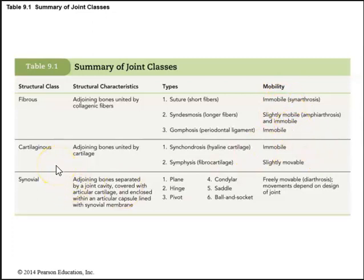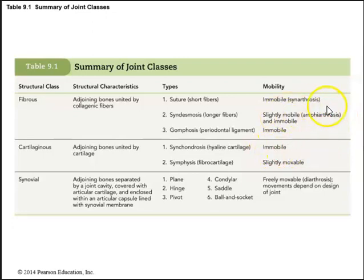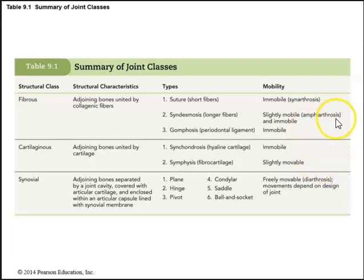We then have cartilaginous joints, where adjoining bones are united by cartilage. There are two types: synchondroses and symphysis. Synchondroses are made up of hyaline cartilage and are immobile — functionally they are synarthroses. Symphysis, like the pubic symphysis, is made up of fibrocartilage and is slightly movable, so functionally classified as amphiarthroses.